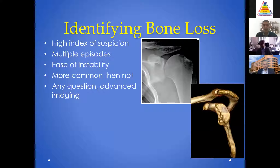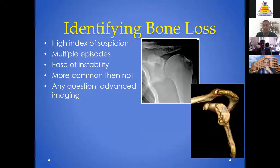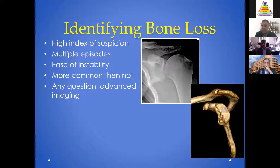Step one: identifying bone loss. The first thing you want to do is have an index of suspicion during your history. If someone's had multiple episodes, if they have very easy instability, if they fall out or have dislocations while sleeping, then it's a concern. Bone loss is more common than not. If you're worried about bone loss, I'm going to go ahead and get a CT scan to look at the degree of instability.